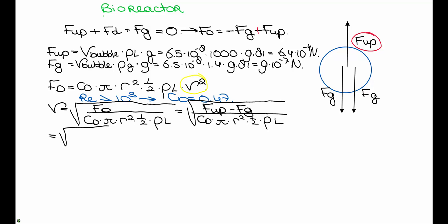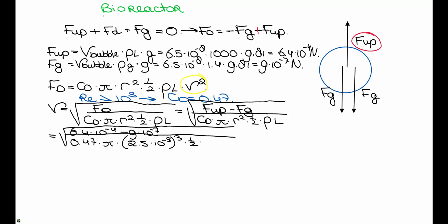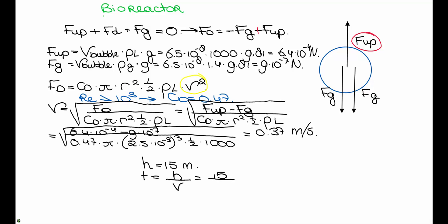If we fill this in carefully we find a bubble rise velocity of 0.37 meters per second. The height of the reactor is 15 meters, so the average residence time of a single bubble is the height divided by the velocity: 15 divided by 0.37, which equals 40 seconds.